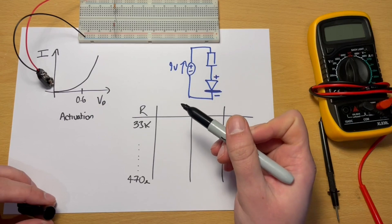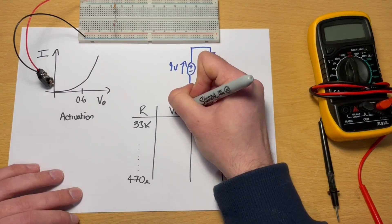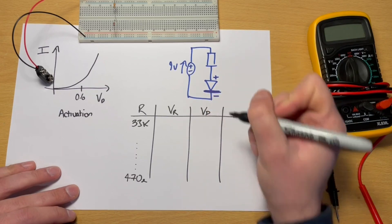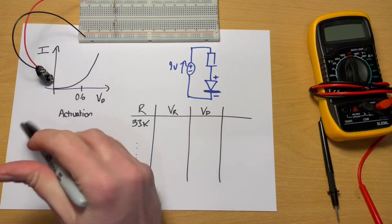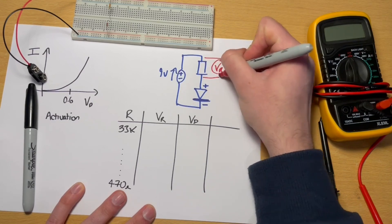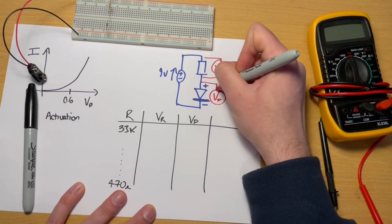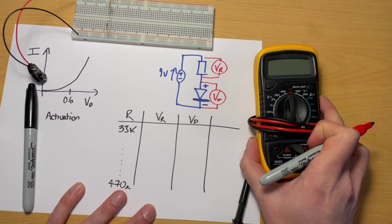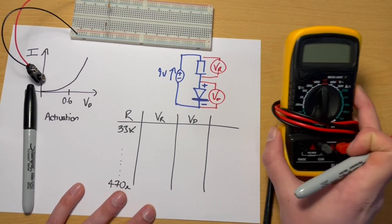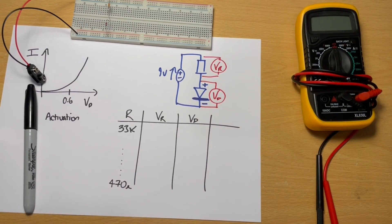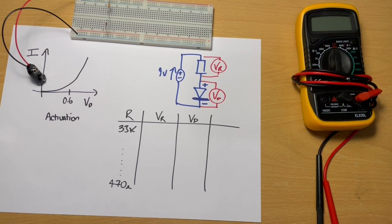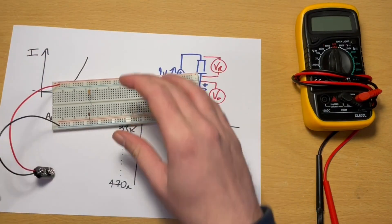For each resistor value I'm going to take two measurements: the voltage across the resistor (VR) and the voltage across the diode (VD). I'll use an ordinary multimeter — you can pick one up for five or ten pounds. There's also one more column I'll come back to in a moment.